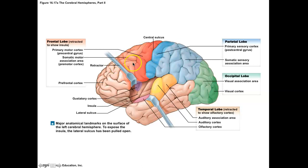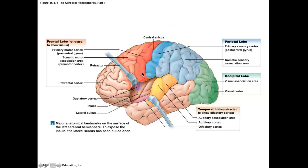Behind the prefrontal cortex is the motor region. The dark red area is known as the primary motor cortex, where you initiate all voluntary muscle control. When you think about moving your hand or smiling — anything involving skeletal muscle — that thought begins here. So the frontal lobe has two major jobs: higher intellectual function and motor control.